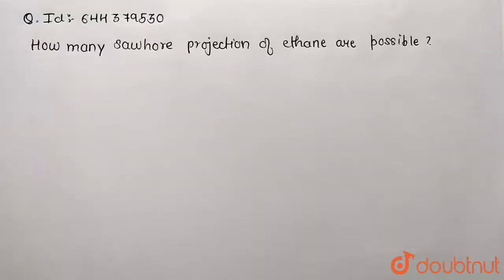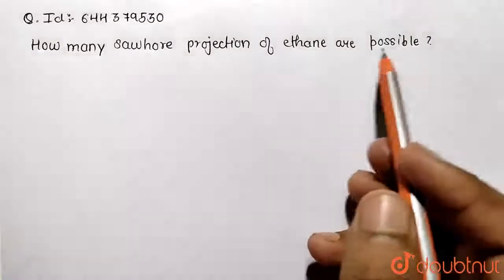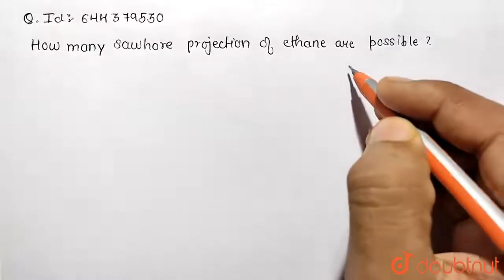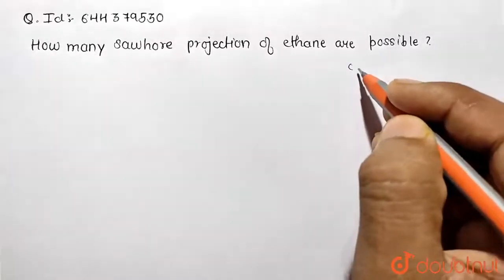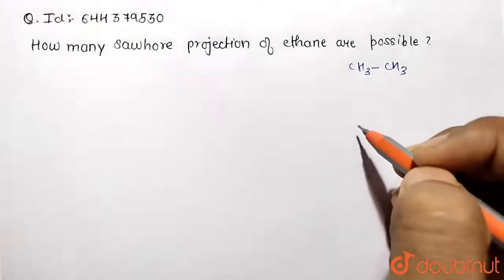Students, in this given question we need to answer how many Sawhorse projections of ethane are possible. So ethane molecule, it is given over here. What is this ethane? This is our C2H6 molecule, or we can write it in the form of CH3-CH3. So what is Sawhorse projection?